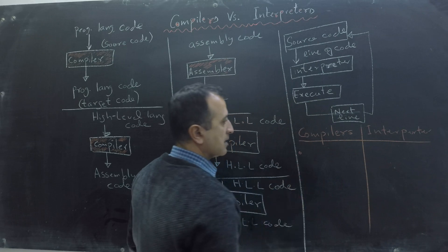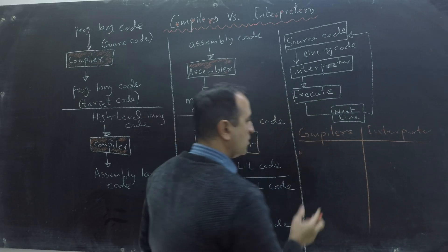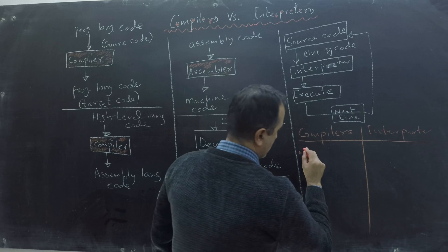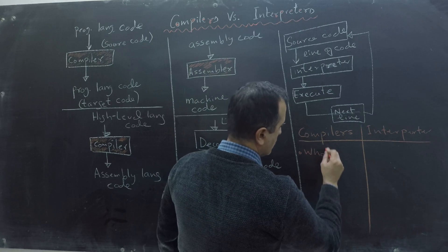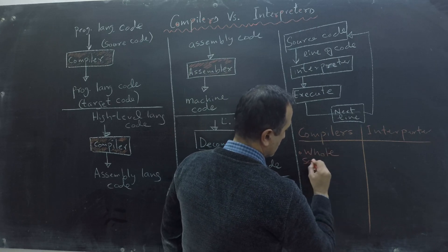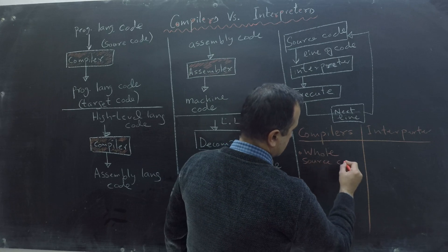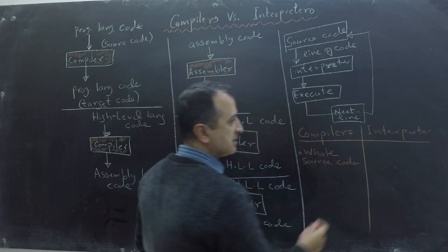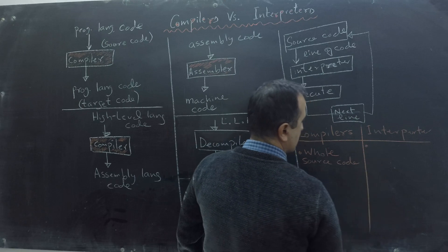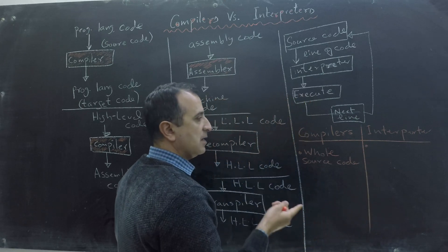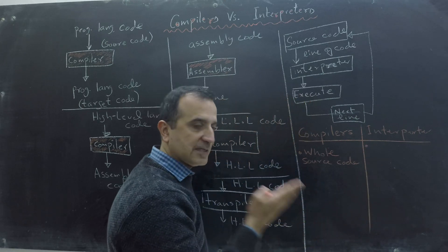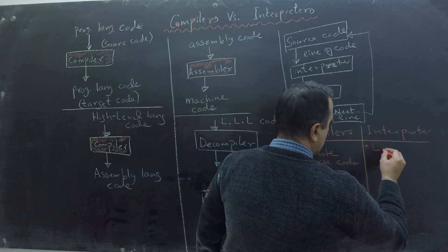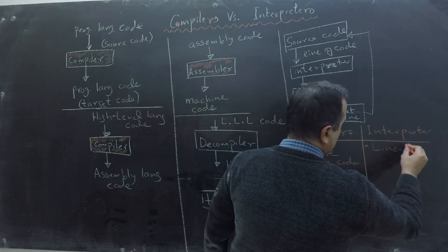Number one: a compiler's input is the whole source code, whereas an interpreter takes input a line of code at a time and translates it — so it is line-by-line translation.